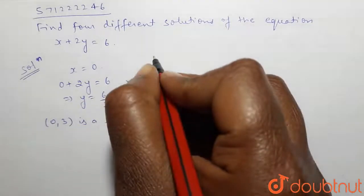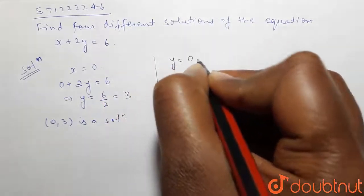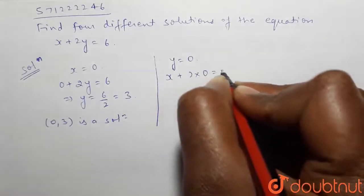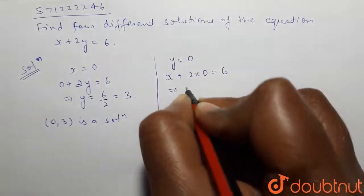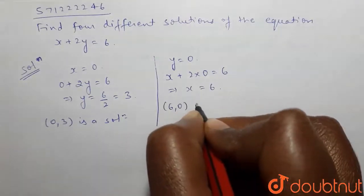Now let's put y equals to 0. Then the equation will be x plus 2 into 0 equals to 6, and this gives x equals to 6. So, (6, 0) is a solution.